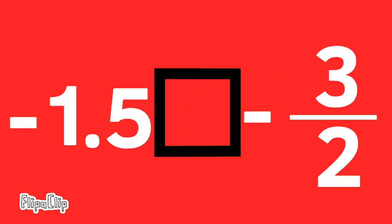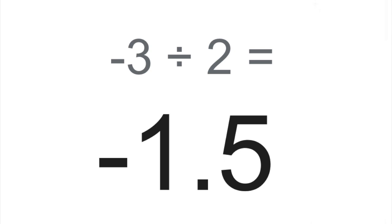Negative 1 and five-tenths compared to negative 3 halves. Negative 1 and five-tenths is equal to negative 3 halves, because negative 3 halves, or negative 3 divided by 2, equals negative 1 and five-tenths, or negative 1.5.